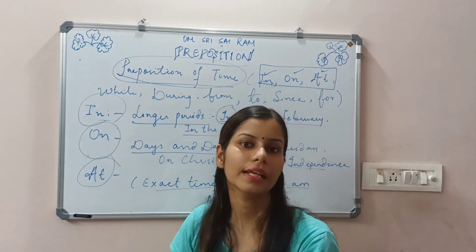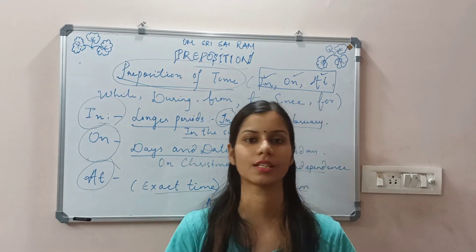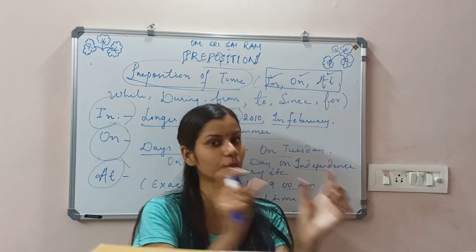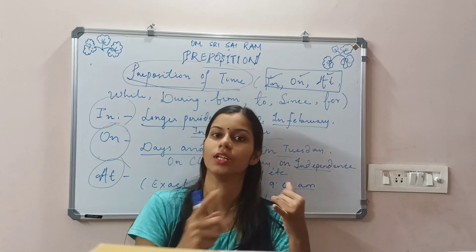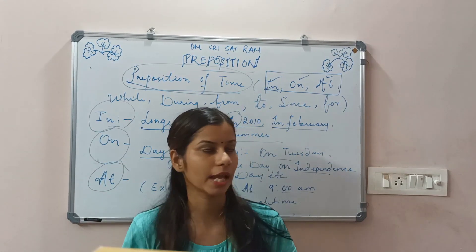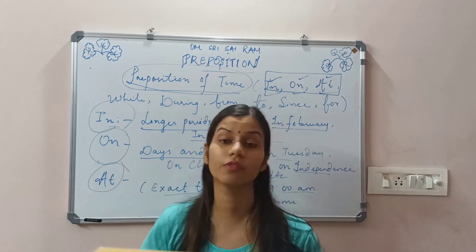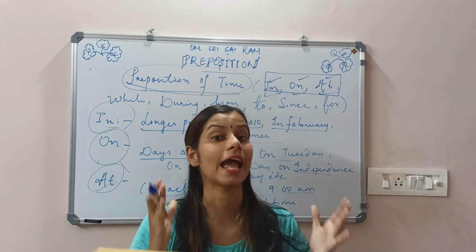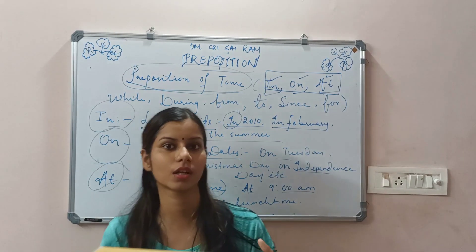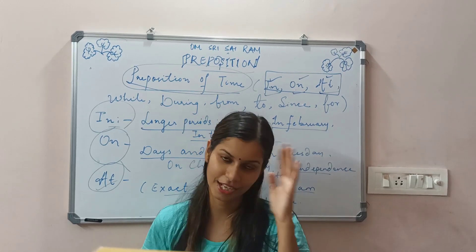So to recap: the definition of preposition is a word which gives us the relation — jo ek position ke before use jata hai, usko hum bolte hain preposition. Under the types of preposition — time, place, movements or direction — today we learned the first type: preposition of time. Under it, we learned 'in' for longer periods, 'on' for days and dates, and 'at' for exact time. In the next class, we will move on to more words and types of prepositions. Till then, stay tuned, like, subscribe, and share. Thank you, goodbye, namaste!